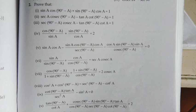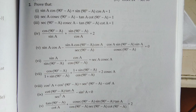Number 9: using cot(90 minus A) equals tan A. Then tan A divided by cos square A, converting tan A as sin over cos, and converting to get the result — which gives 0. Number 10: converting using complementary angles, then cancelling terms to get the result of 2.